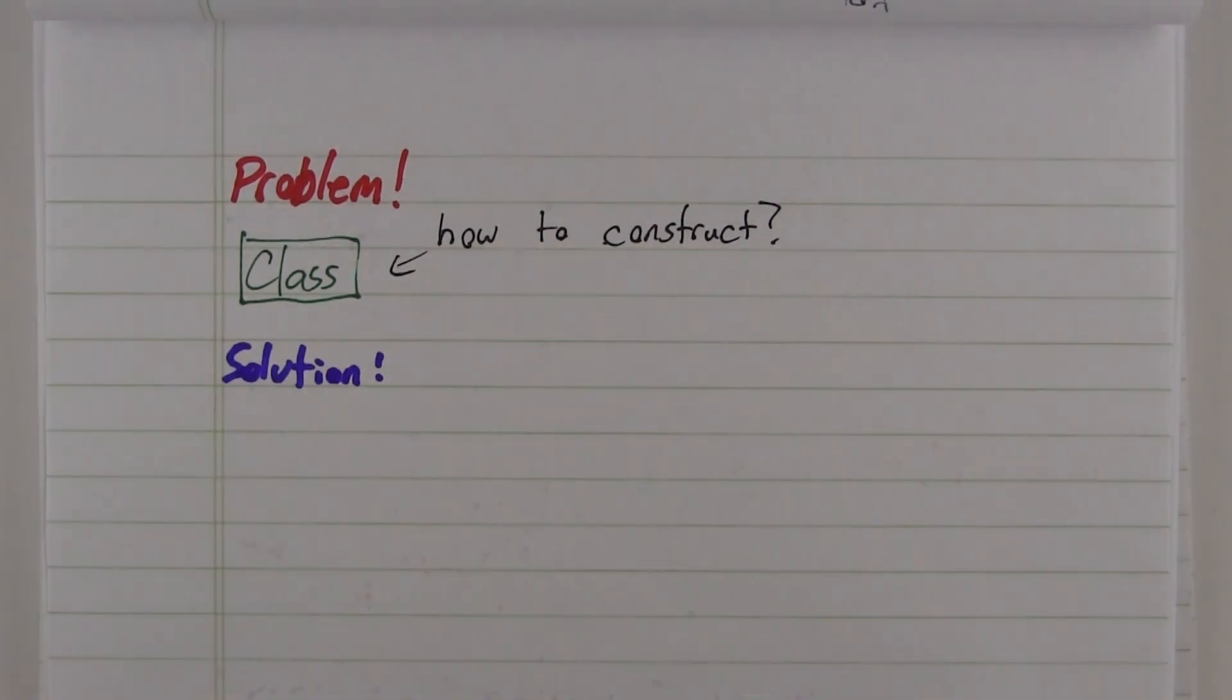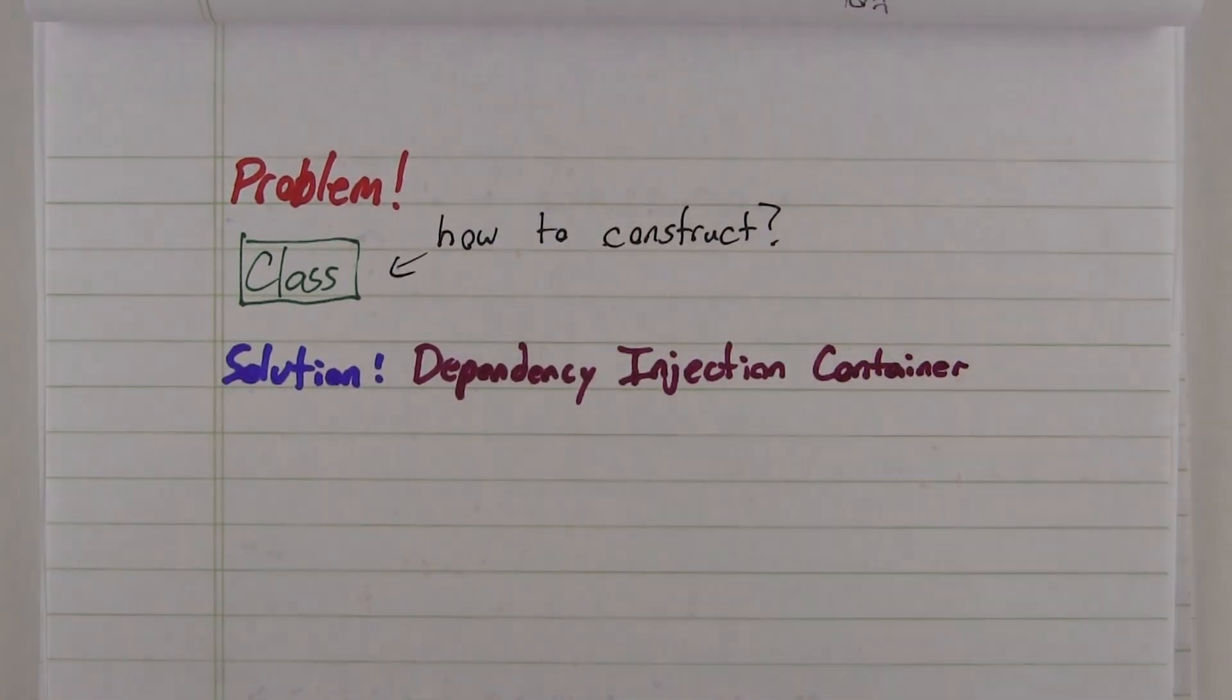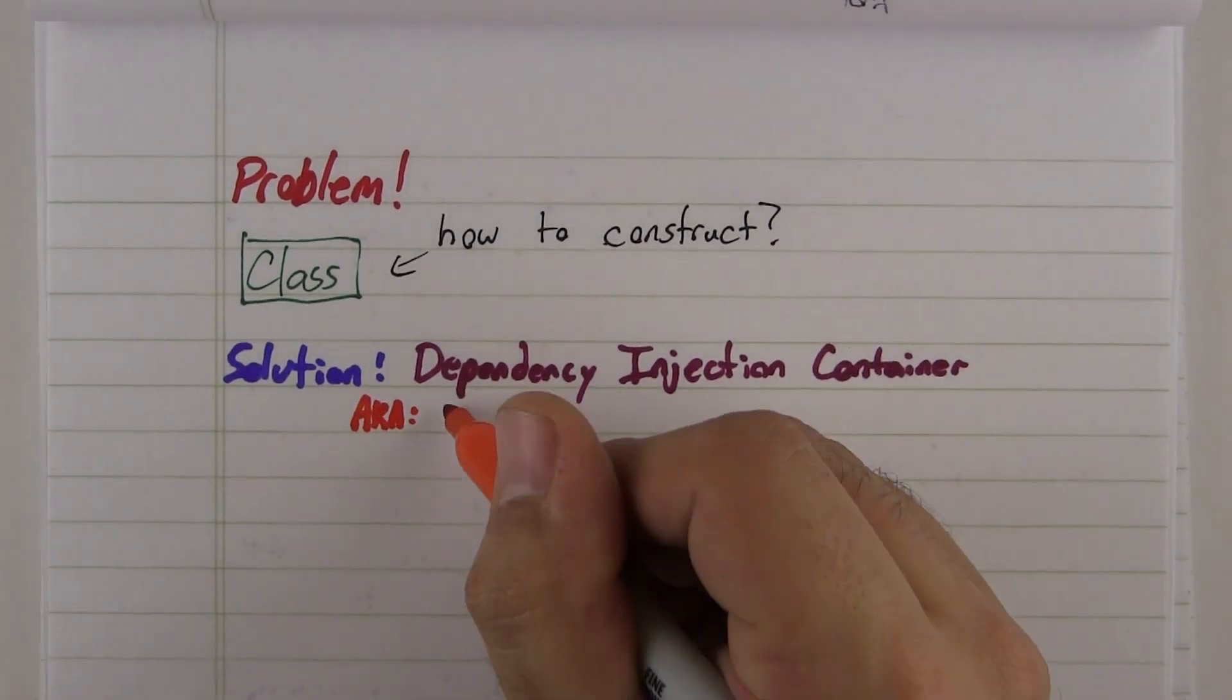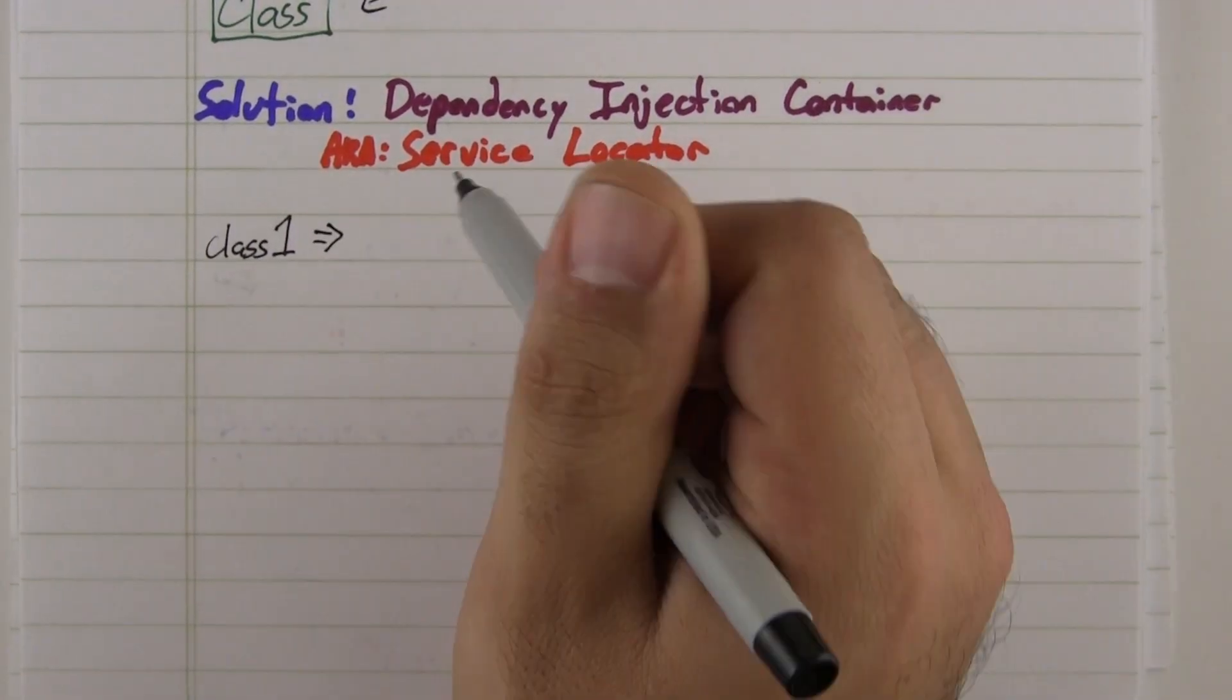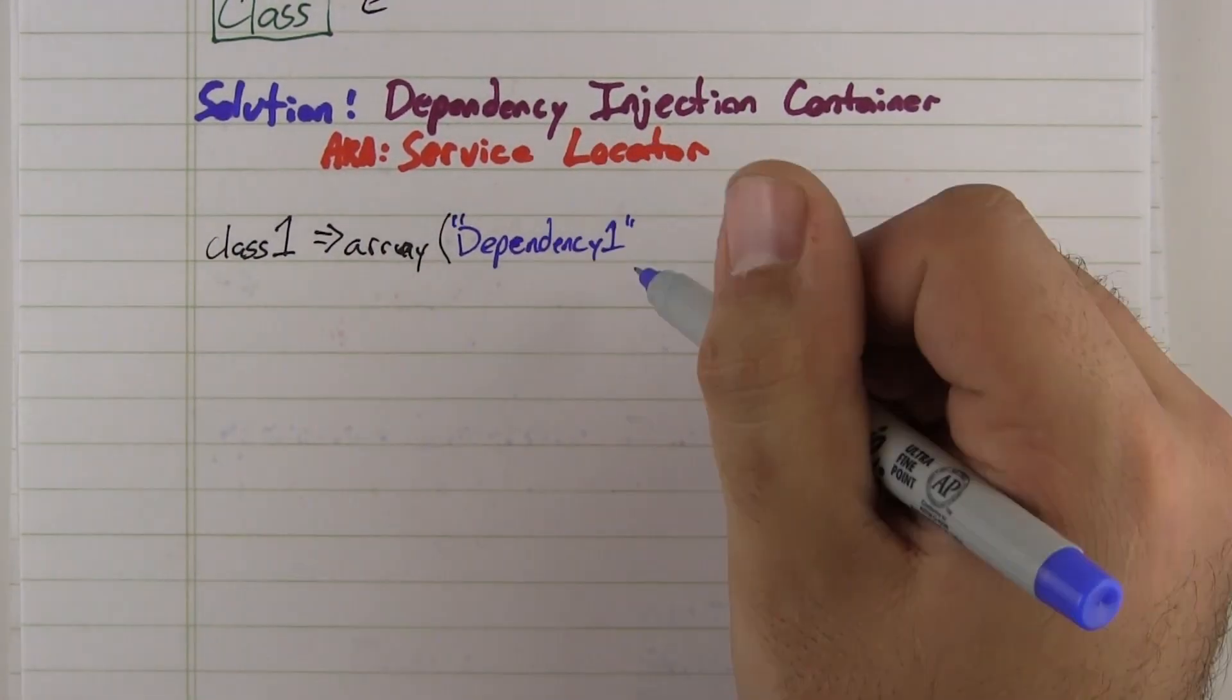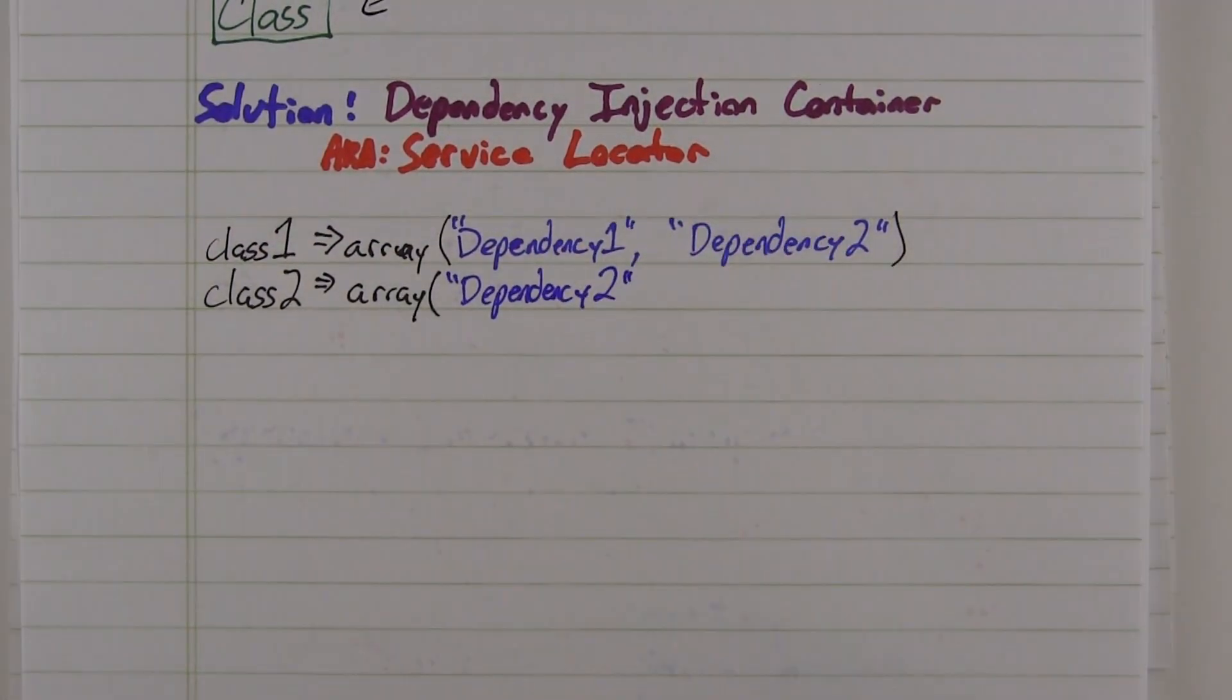Luckily for us, there's a solution. Enter the dependency injection container. At the root, the container is nothing more than a map of dependencies that your class needs, with the logic to create those dependencies if they haven't been created yet.